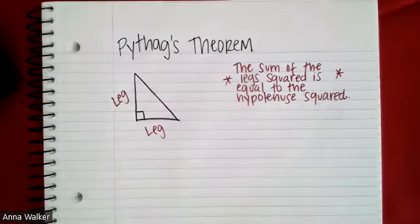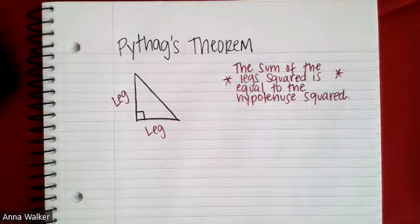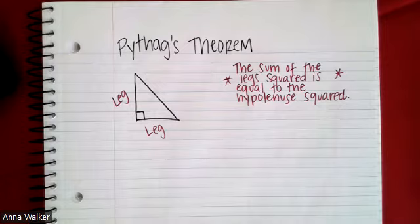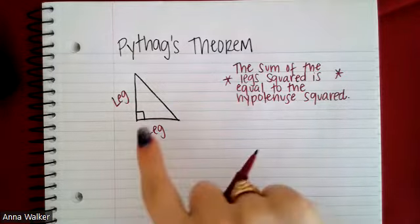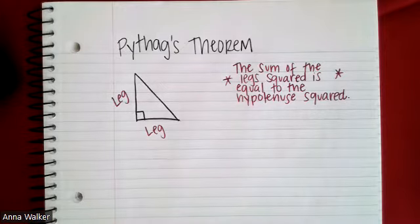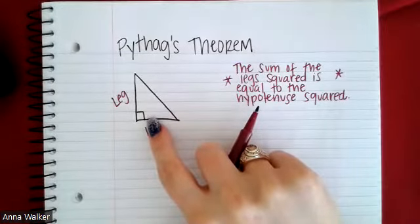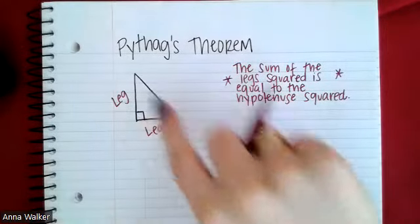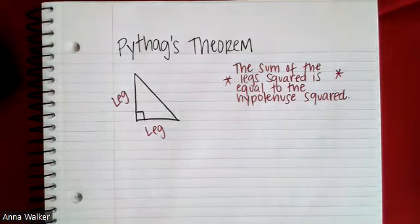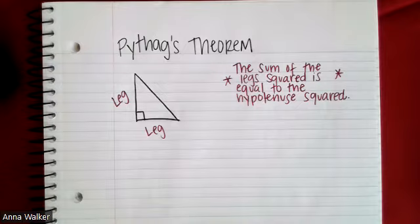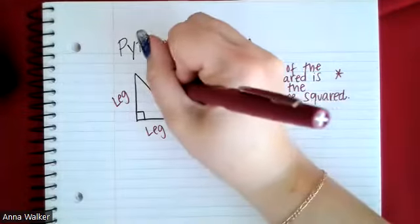Just like you and I have two legs, a right triangle also has two legs. We call the side across from the right angle — which is also the longest side of the triangle — the hypotenuse.